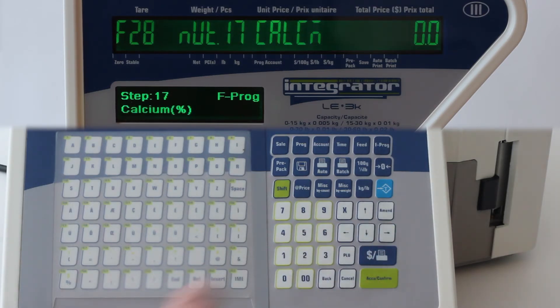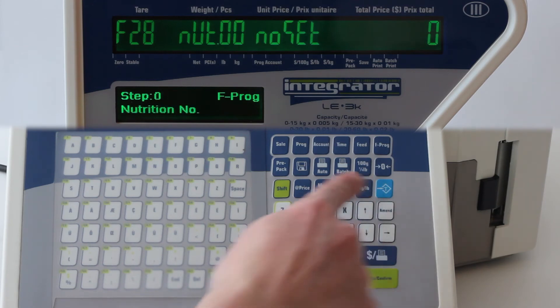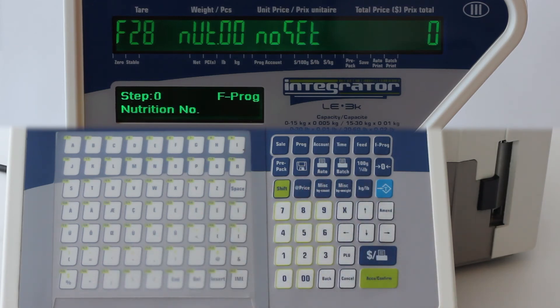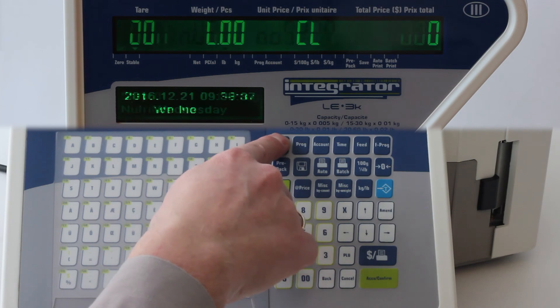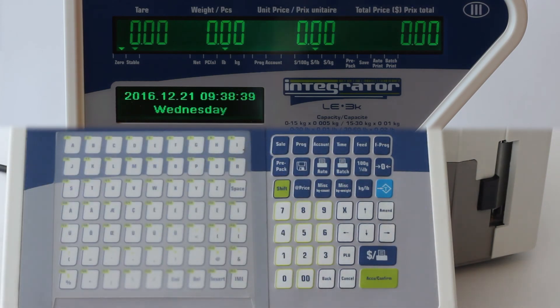Once you reach the end of the fields, press amend to confirm. The program will revert back to the first step. You can keep populating the nutritional facts table or press the sale button to exit.